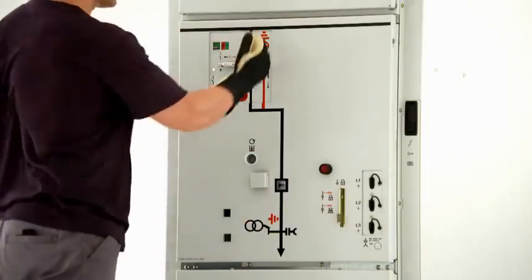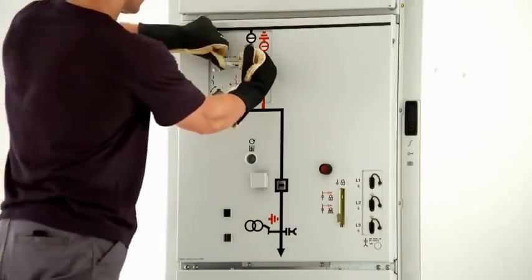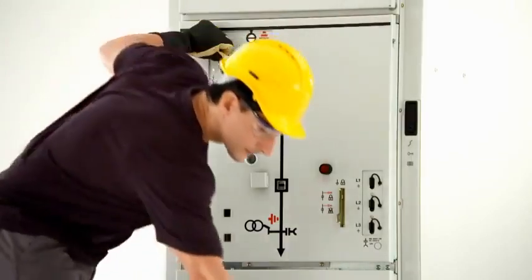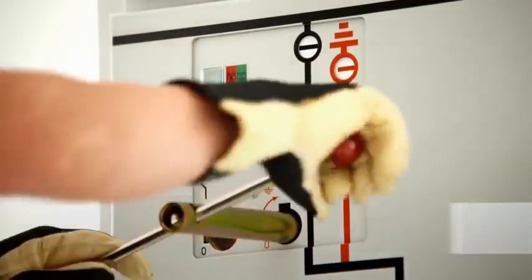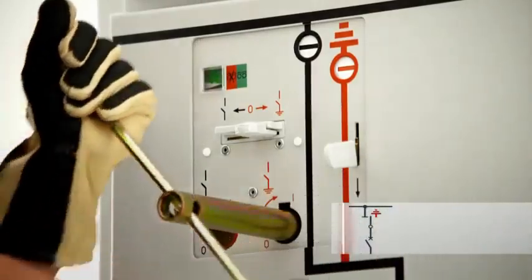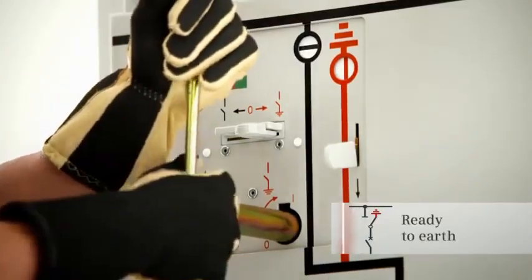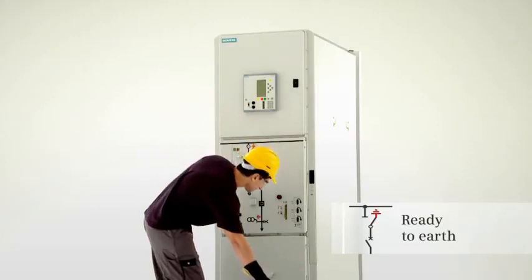The interrogation lever is now pushed down again and the control gate is pushed to the right to unlock the actuating opening for ready to earth. Turning the operating lever clockwise switches the three position disconnector to the ready to earth position.